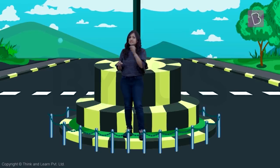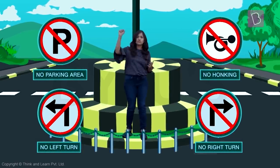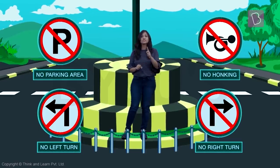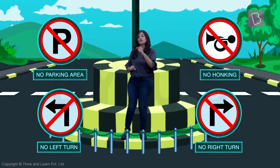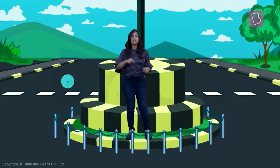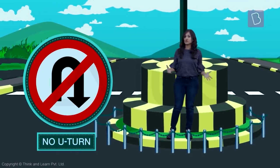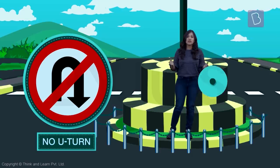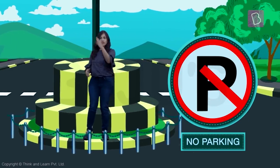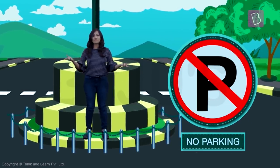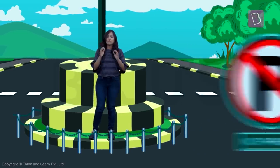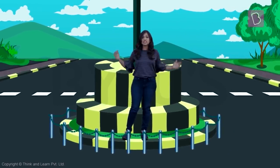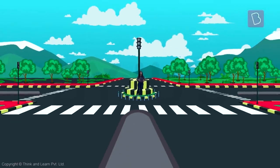You may have noticed that some signs have a strike-through on them. That means you cannot do that particular thing. For example, a U-turn sign with a strike-through means no U-turns allowed. The same applies to any sign — put a strike-through on a parking sign, and it means no parking.